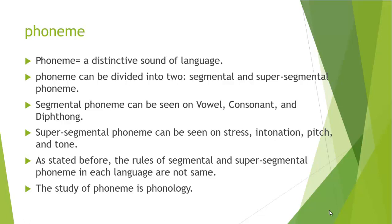A phoneme can also be in the form of super segmental. Super segmental refers to speech sounds produced simultaneously when segmental sounds are produced. For example, when the airflow from the lungs reaches the vocal cords and touches the teeth — the dental area — producing a consonant sound, at the same time we also produce what is called stress, intonation, pitch, or tune. That is called super segmental. Segmental comes in the form of vowels, consonants, or diphthongs, while super segmental comes in the form of intonation, stress, tone, or pitch.